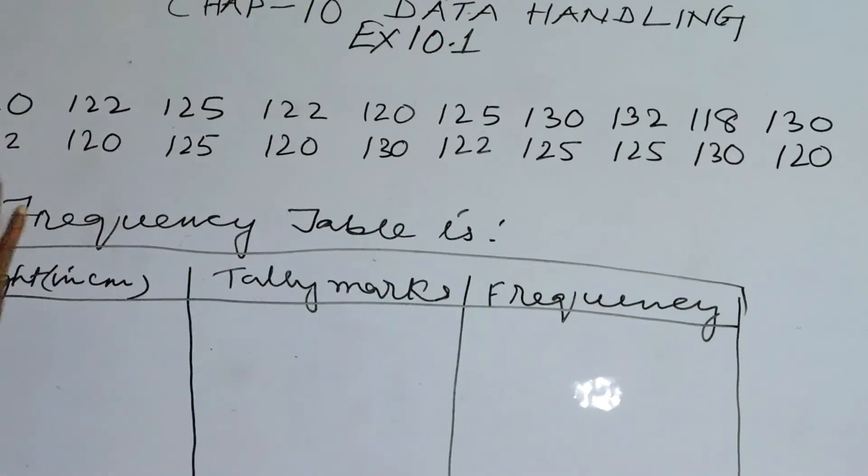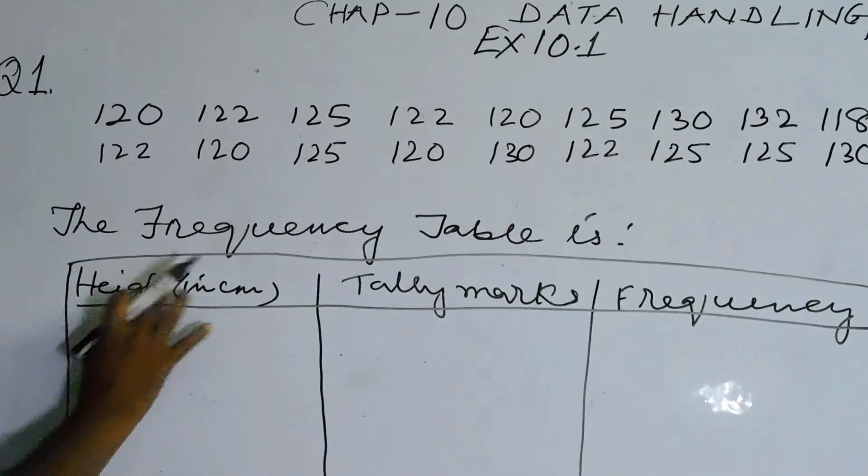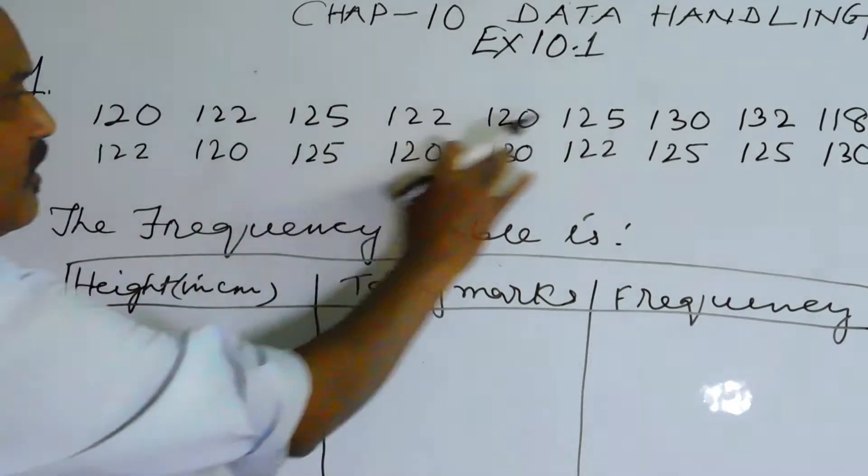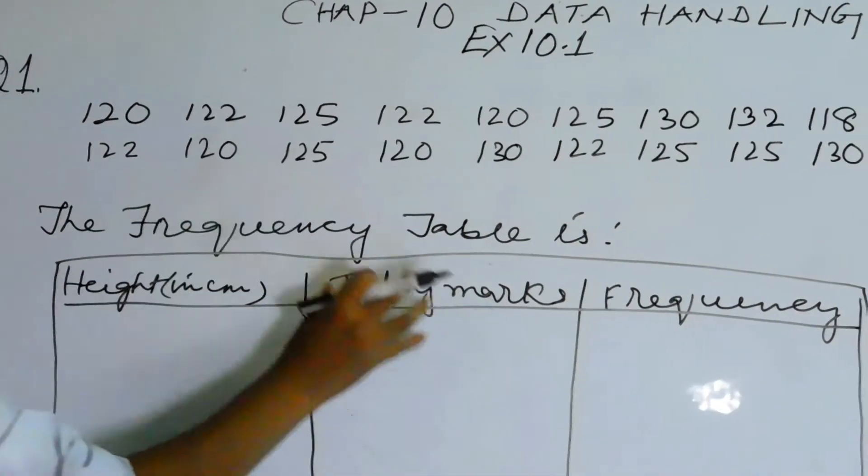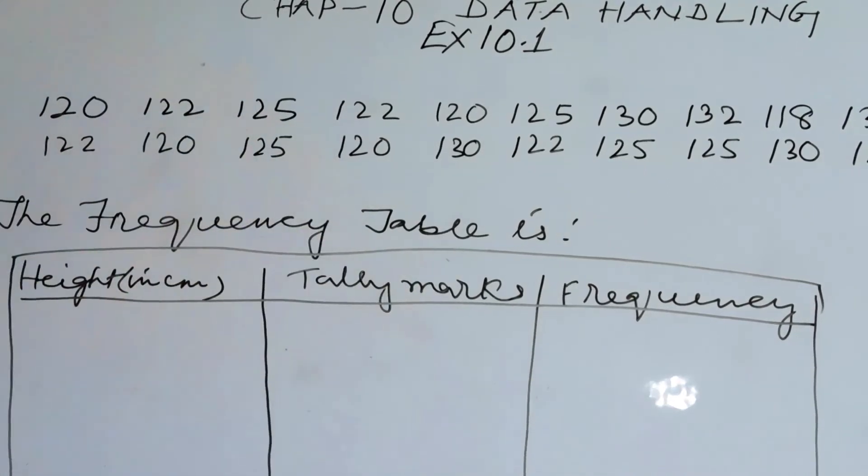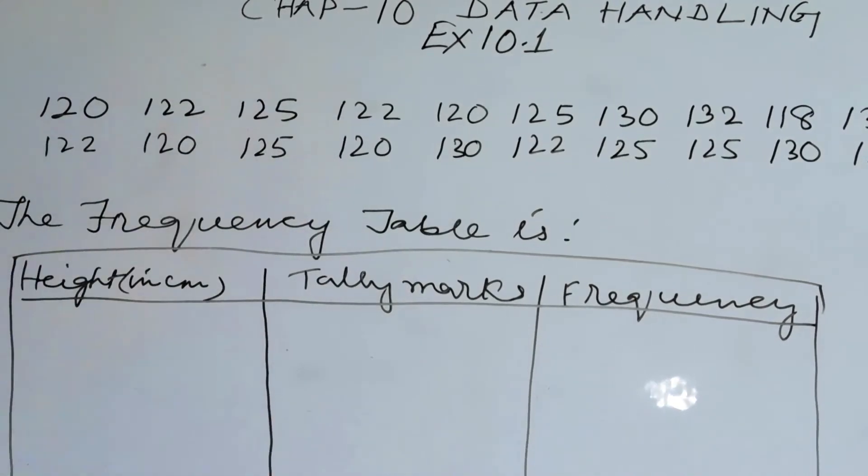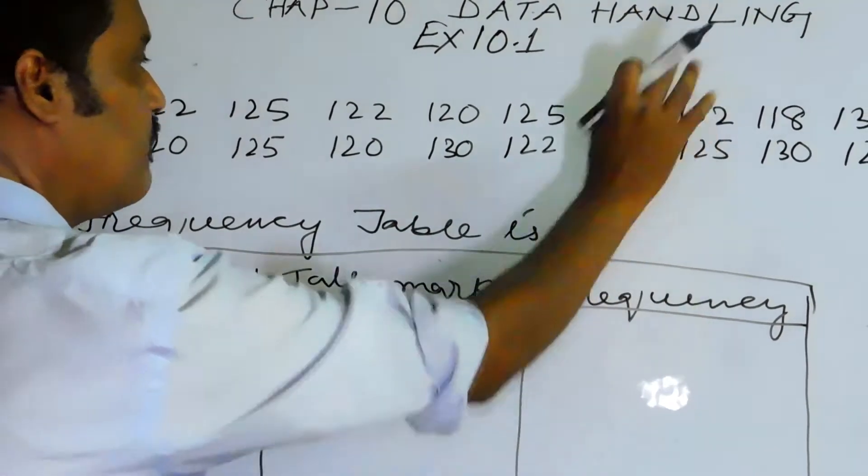After that you have to make a frequency table. Now frequency table is first column height in centimeter, these are all heights of 20 people, so height in centimeter. Then comes tally mark. Now what is tally mark is the observation that you make on different heights, so that is what tally mark is. And frequency, the number of people on that particular height.